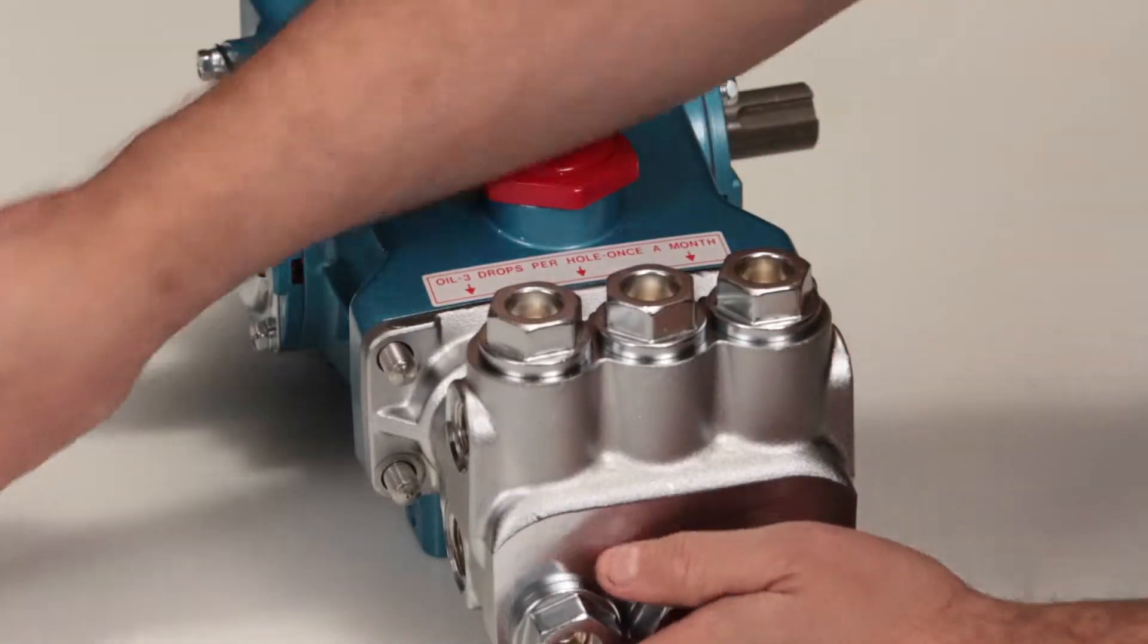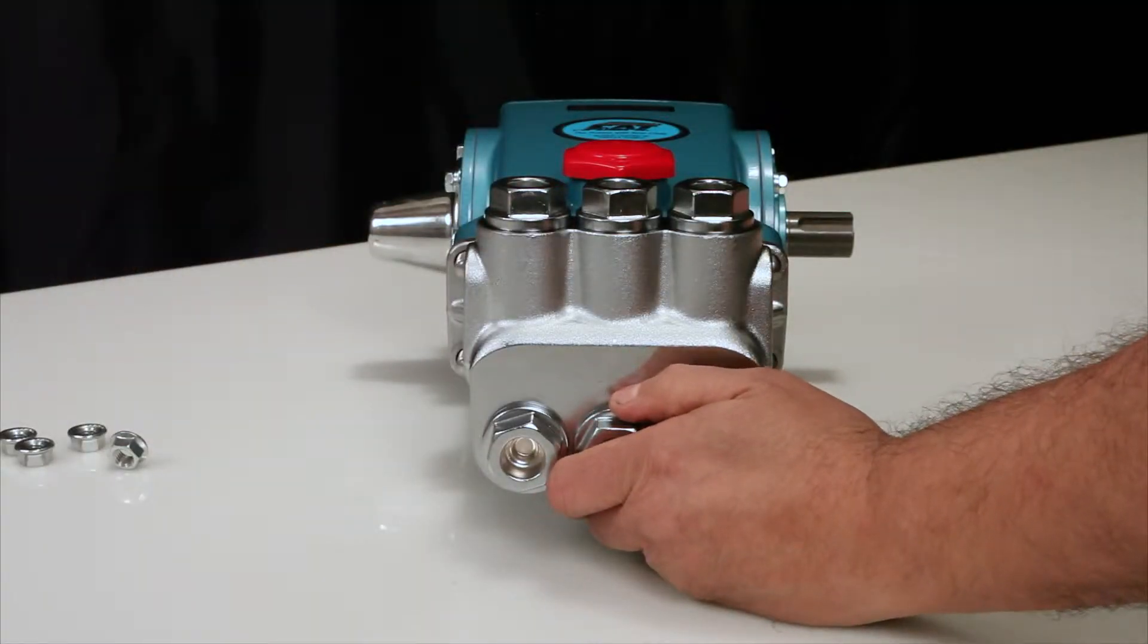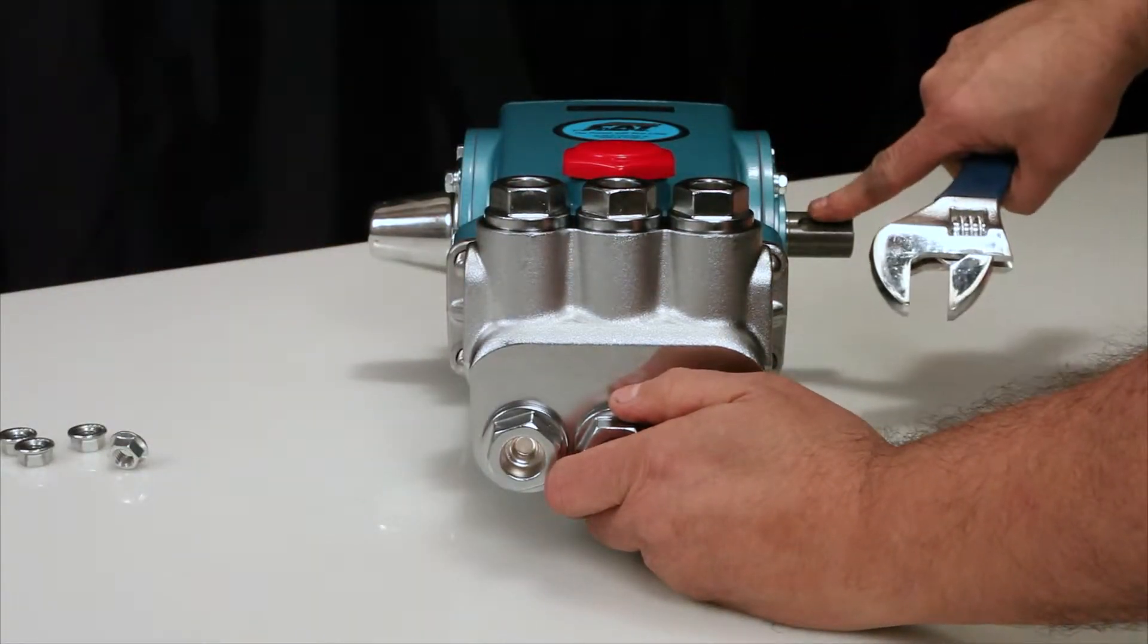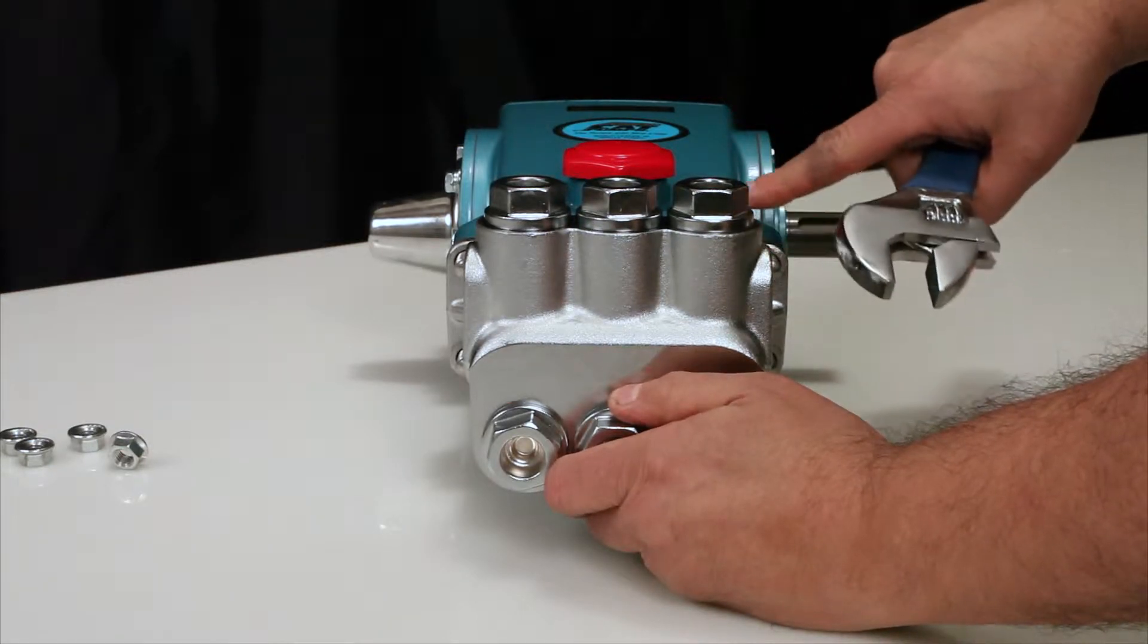To create separation between the manifold and crankcase, rotate the crankshaft until there is a gap between the manifold and crankcase.